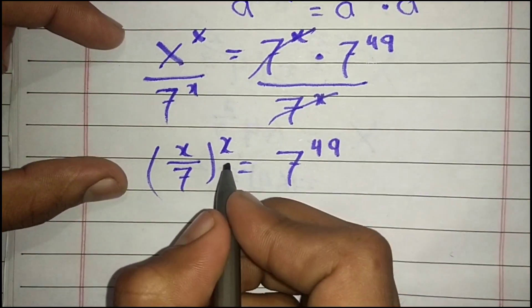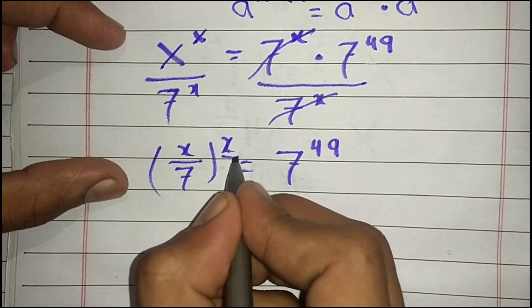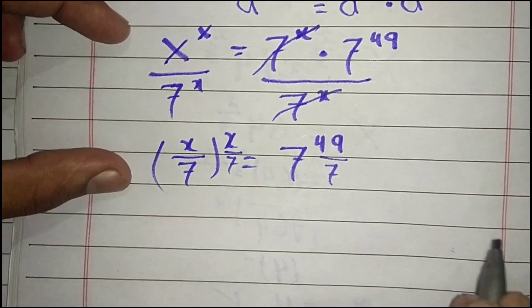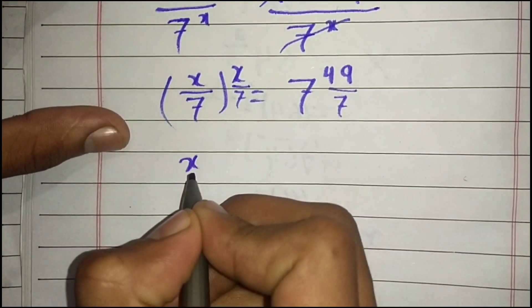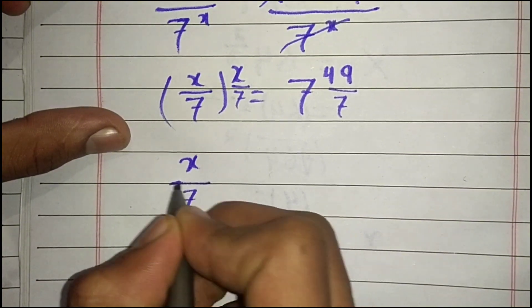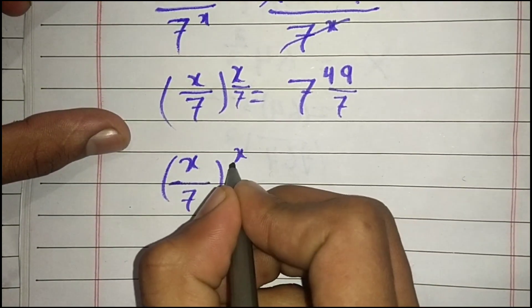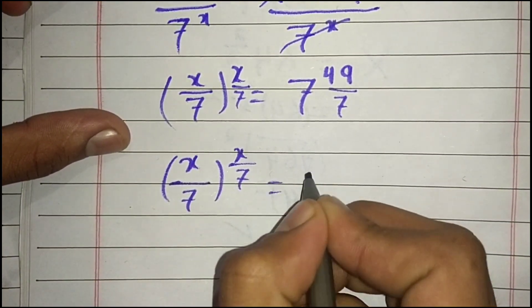Now we divide both powers by 7 on each side. So we get (x/7)^(x/7) = 7^(49/7).